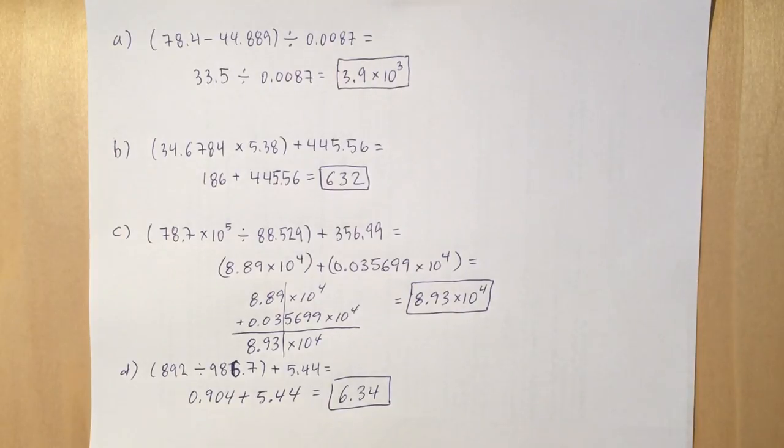And then when we divide that by 0.0087, we've got to use the division sig fig rules. So we go to two significant figures, so it's 3.9 times 10 cubed.